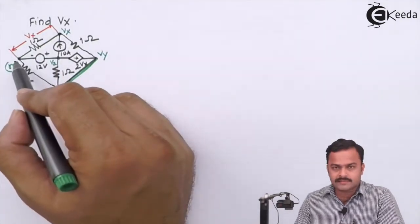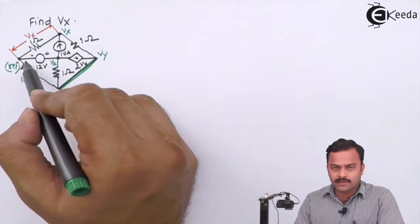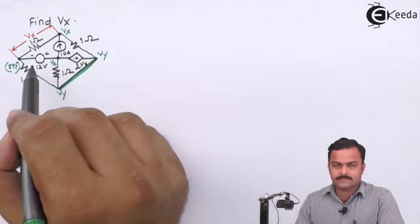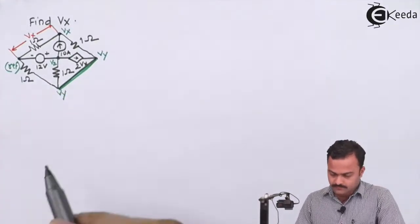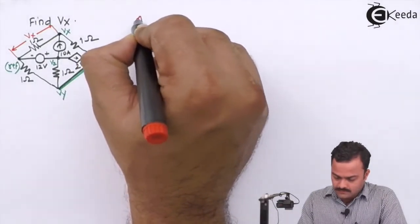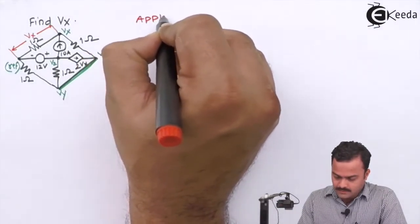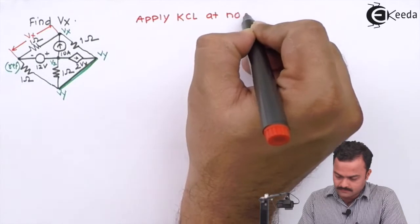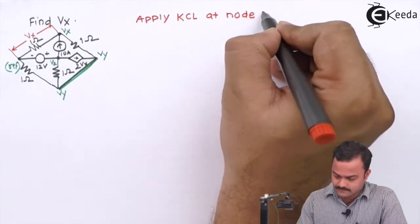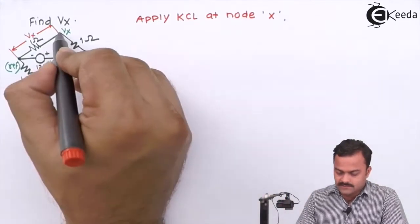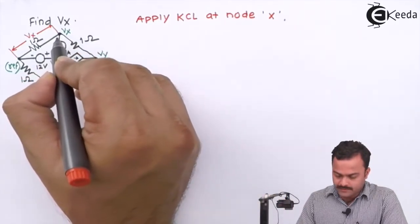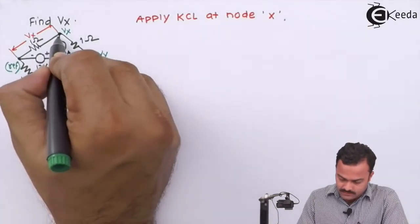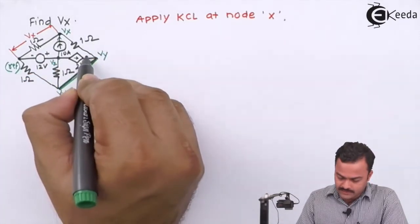So out of the four nodes, one we have taken as a reference — we selected a reference node where the negative terminal of the only voltage source is present. Let's solve now. Let's apply KCL at node X where the potential is Vx. Before applying KCL we have to mark all the branch currents, so we will keep the current directions for the current sources as per the given direction.